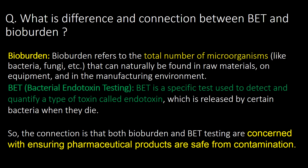One more test that is done along with BAT is the Bioburden test. What is the difference and connection between BAT and Bioburden? Bioburden refers to the total number of microorganisms — like bacteria, fungi, etc. — that can naturally be found in raw materials, on equipment, and in the manufacturing environment. Whereas BAT is a specific test used to detect and quantify endotoxins released by certain bacteria when they die. Both Bioburden and BAT testing are concerned with ensuring pharmaceutical products are safe from contamination.